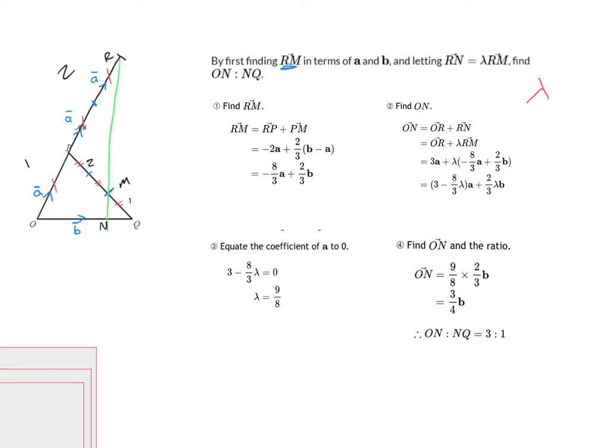Okay, so I know that O to N is going to be nine eighths, which is my lambda, multiplied by two thirds of b. By two thirds of b times nine eighths comes to three quarters of b. So, I know that this point is three quarters of the way along my line. So, my ratio of here to here, O to N to N to Q, rather, is three to one. That is three quarters of the way there.